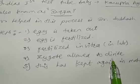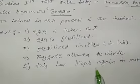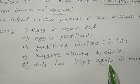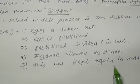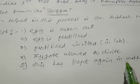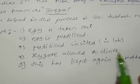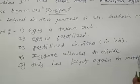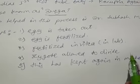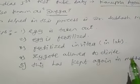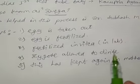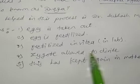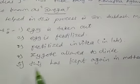So fertilization takes place in the laboratory. Then the zygote is allowed to divide. The zygote and early embryo are kept to multiply — from two cells to four to eight. It is kept to multiply up to the eight-cell stage, that is the blastomere stage.